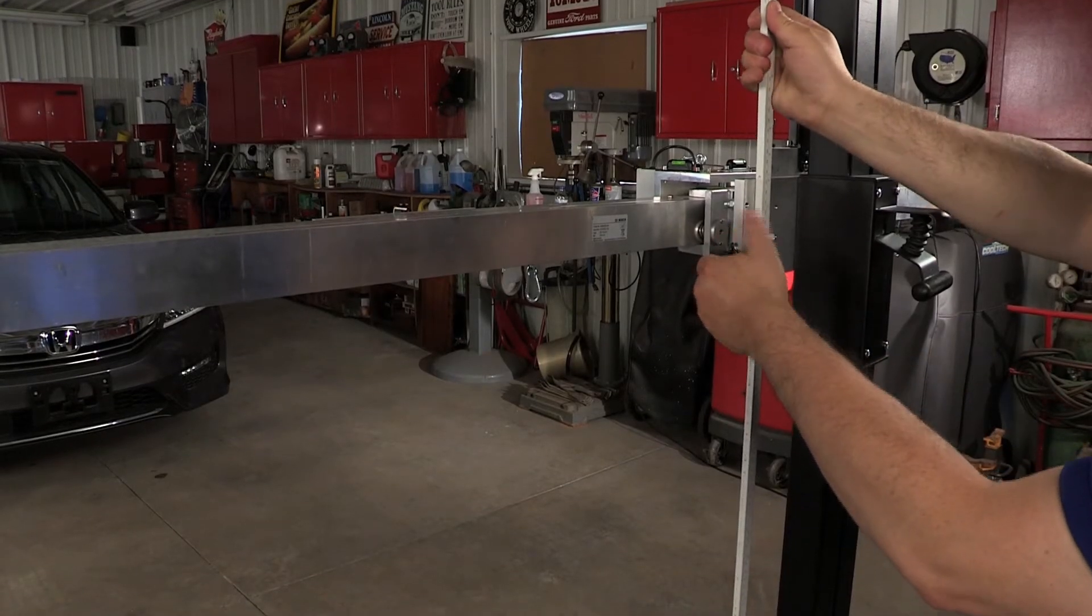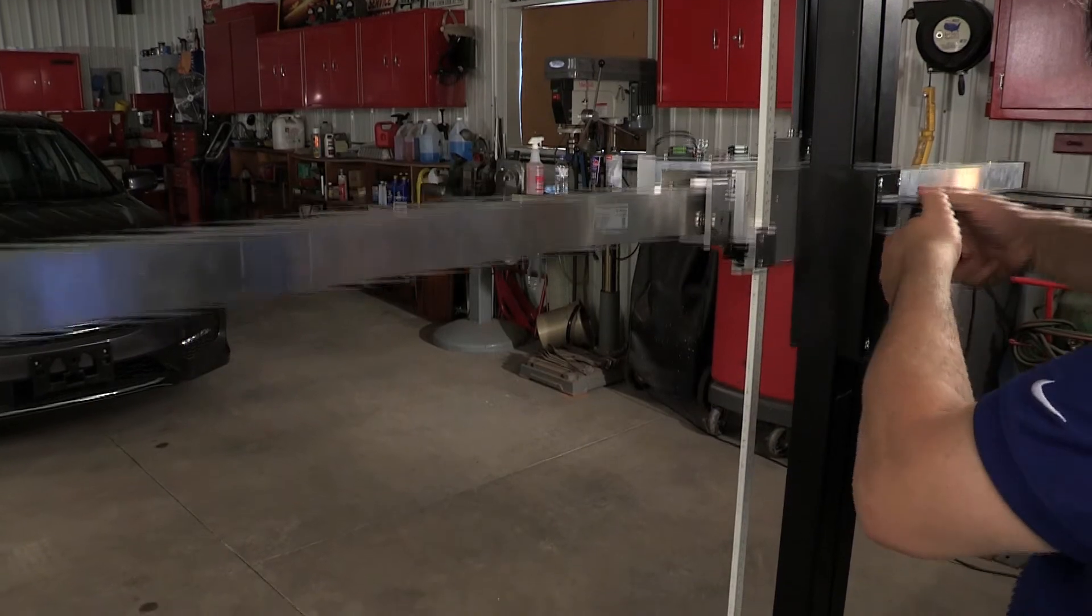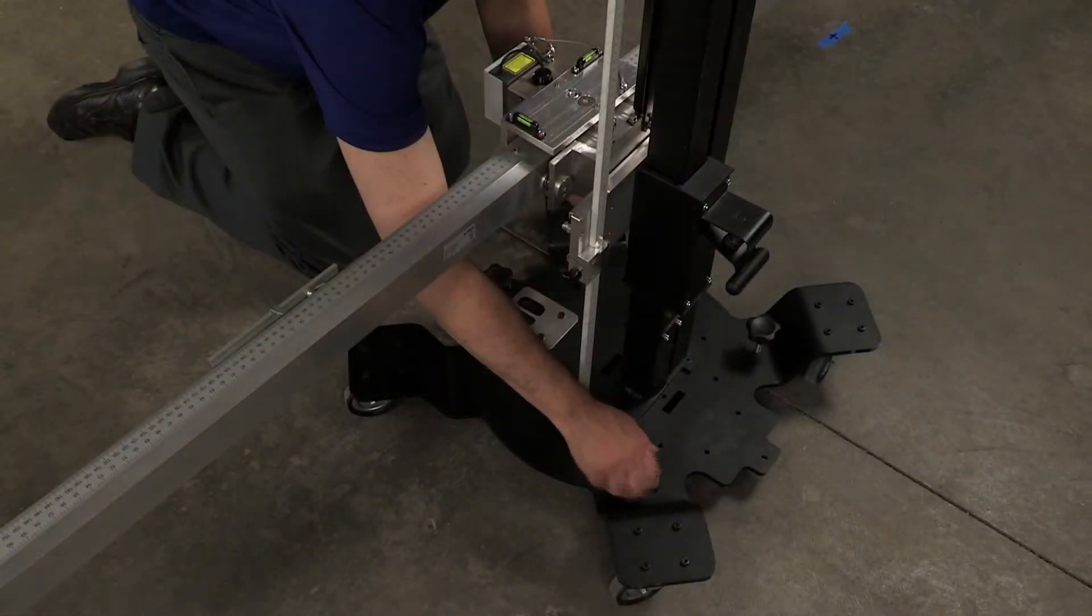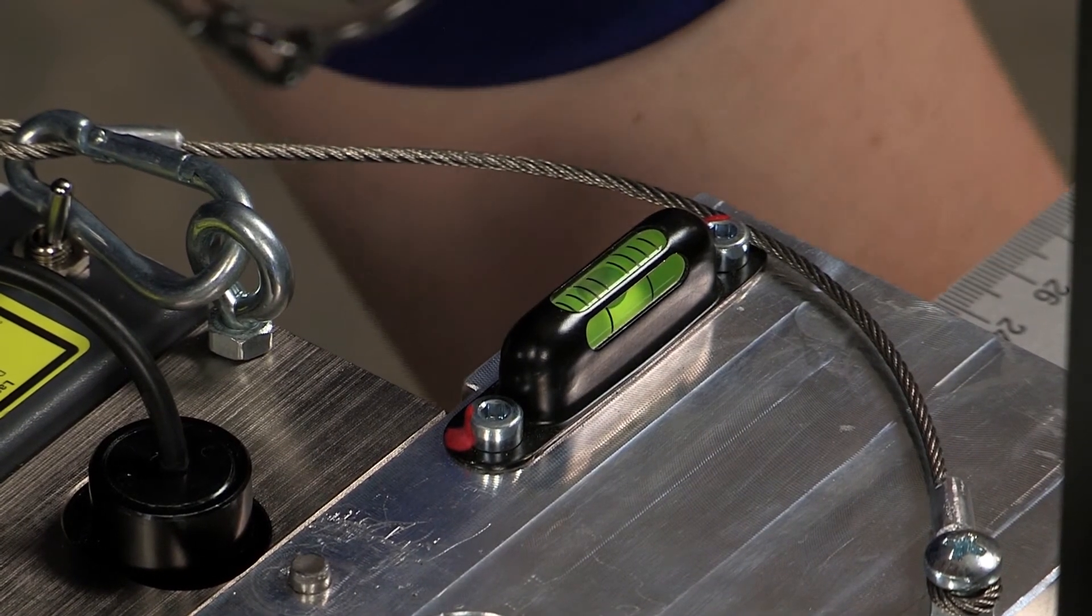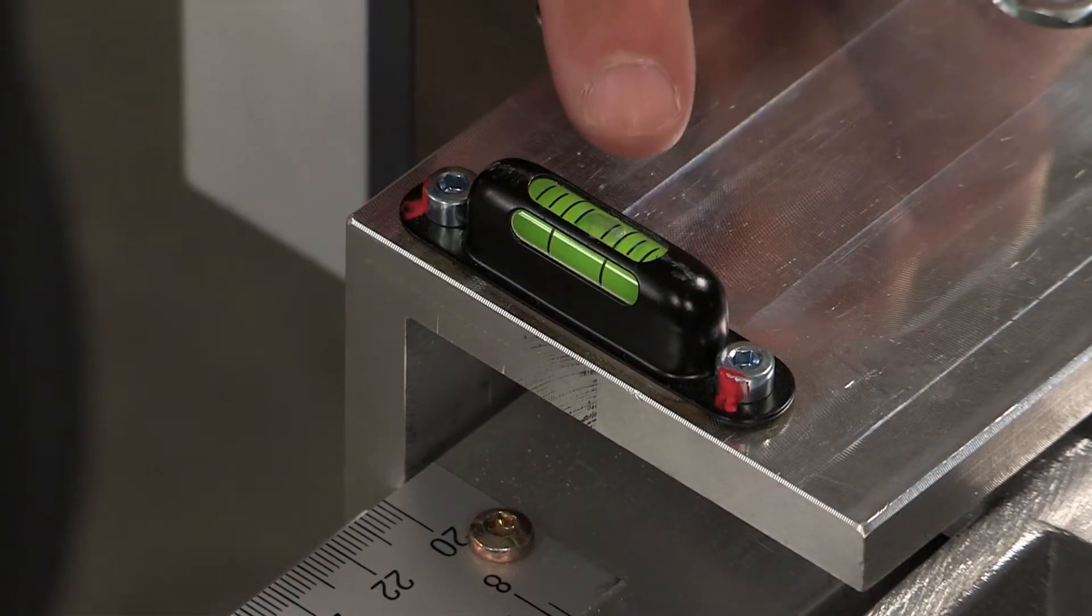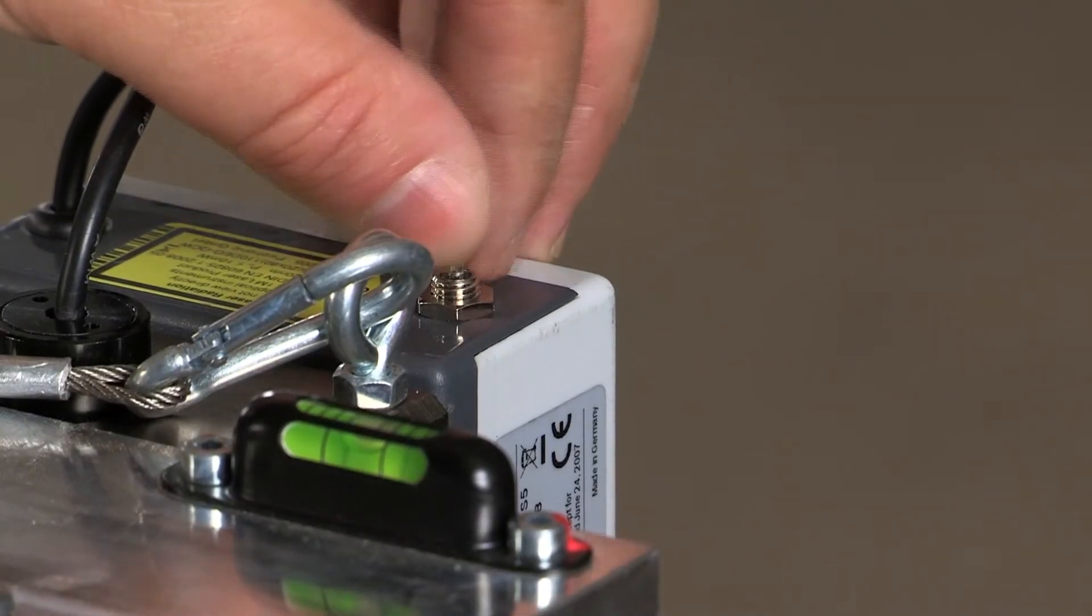We are now going to level the target stand. The first thing to do is to take the horizontal target bar and bring it to its lowest point. Then take the three screws at the base of the stand and turn them to bring the bubble of the spirit level to center. After leveling, check the horizontal alignment with the laser.